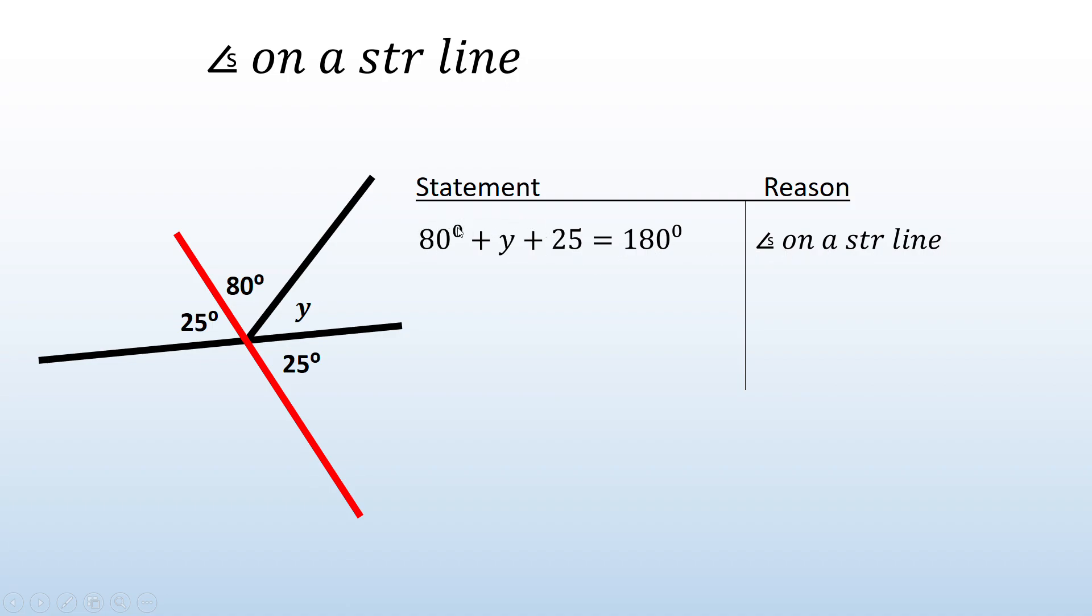Then I can get my like terms. So 80 plus 25 is 105. Subtract it from 180 to get y alone, and you're going to get that y is equal to 75 degrees. So that's reason number two.